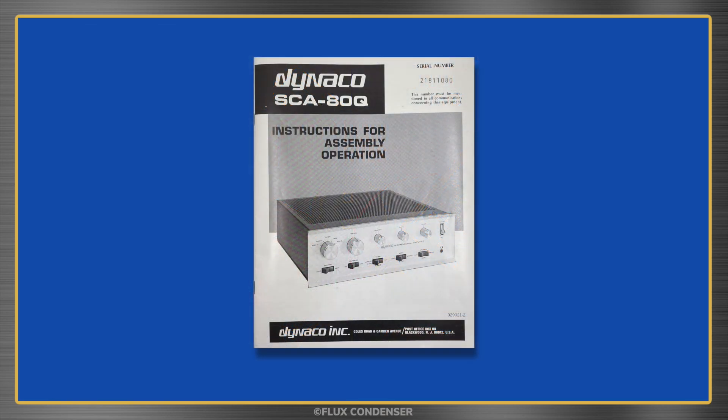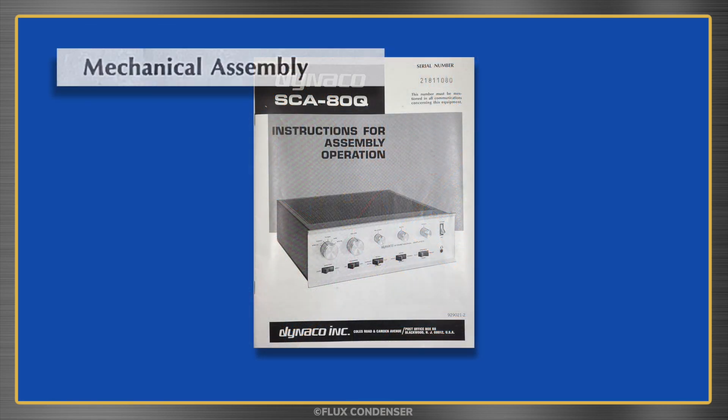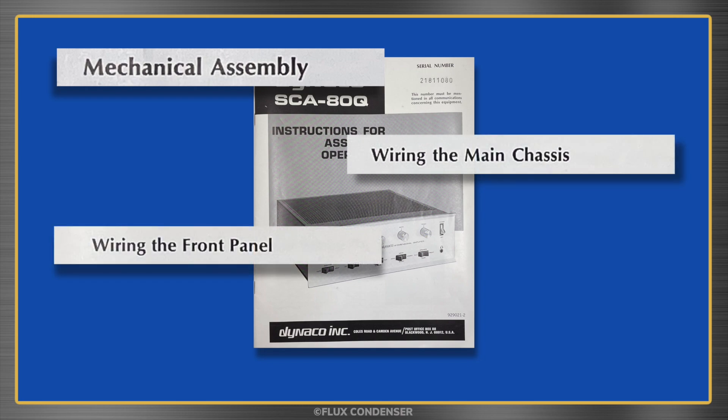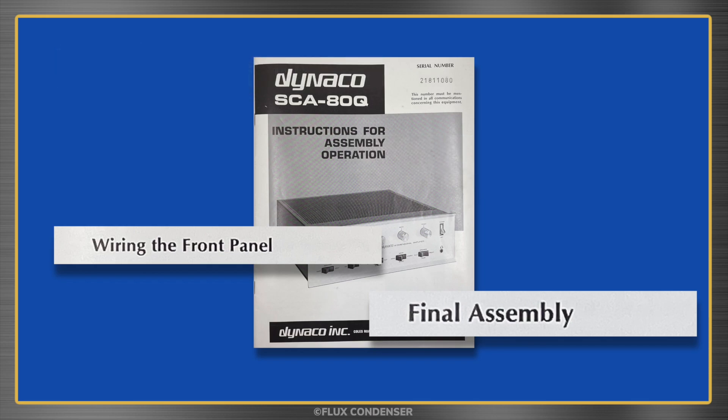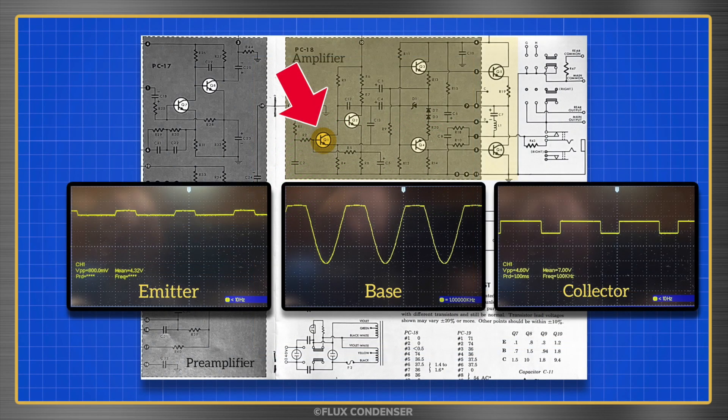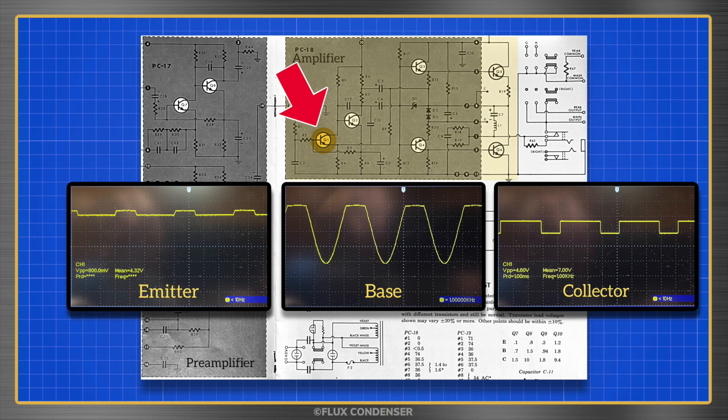The manual for the kit is broken down into 4 sections: mechanical assembly, wiring the main chassis, wiring the front panel, and final assembly. In this video, I'll complete the third and fourth sections, wiring the front panel and final assembly. And in the end, I'll fire up the amp to see how it performs. Stay tuned to see if you can figure out what went wrong.